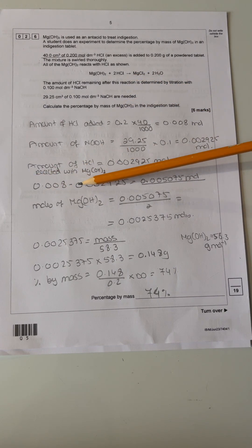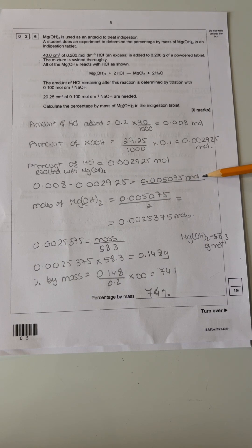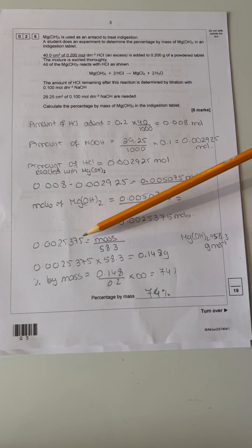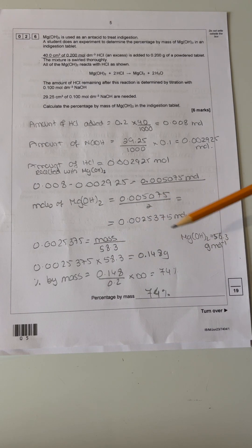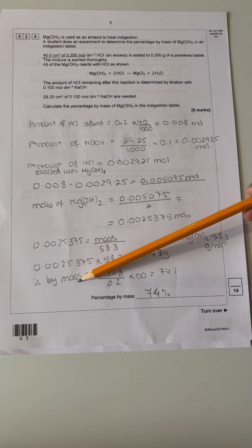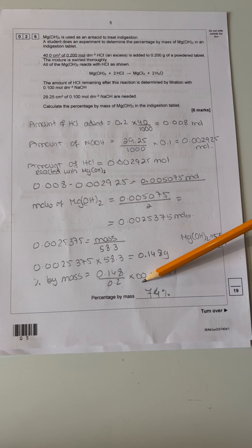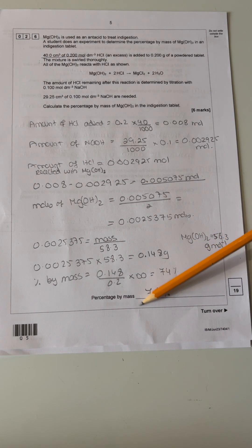You start by working out the amount of HCl added, which is 0.2 times 40 divided by 1000, giving you 0.008 moles. Then you work out the amount of sodium hydroxide, which is 29.25 divided by 1000 times 0.1, giving you that value. The amount of HCl, which is ratio one to one, will give you the same amount. So 0.008 minus 0.002925 gives you the moles of HCl left over. Moles of magnesium hydroxide is this value divided by two because the ratio is one to two. Once you have that, you plug in the equation moles equals mass over molar mass. You've got the moles, you've got the molar mass—that's the magnesium hydroxide molar mass calculation. You work it out, gives you the mass of 0.148 grams. Percentage by mass: you take the amount of mass you calculated divided by 0.2 grams times 100, which gives you 74%.